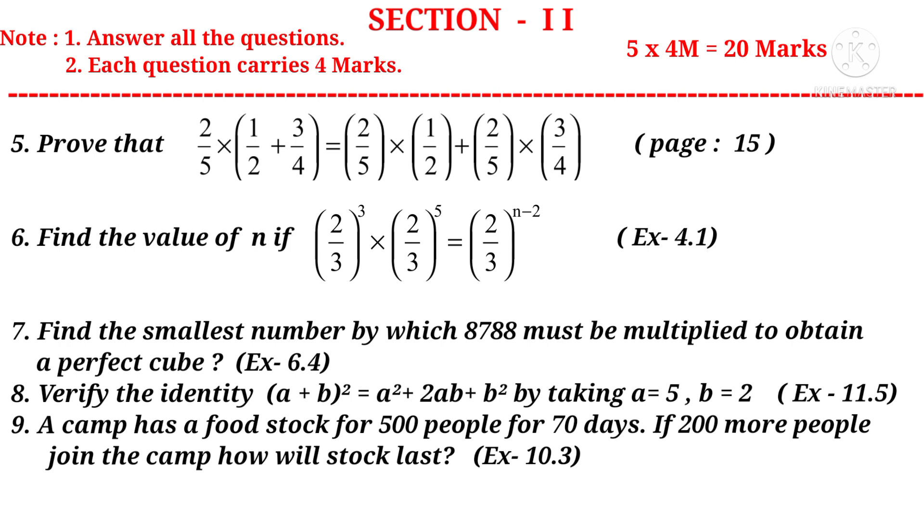Number 7, find the smallest number by which 8788 must be multiplied to obtain a perfect cube. It is a question from the 6th chapter. Number 8, verify the identity (a + b)^2 = a^2 + 2ab + b^2 by taking a = 5 and b = 2. It is a question from the 11th chapter.